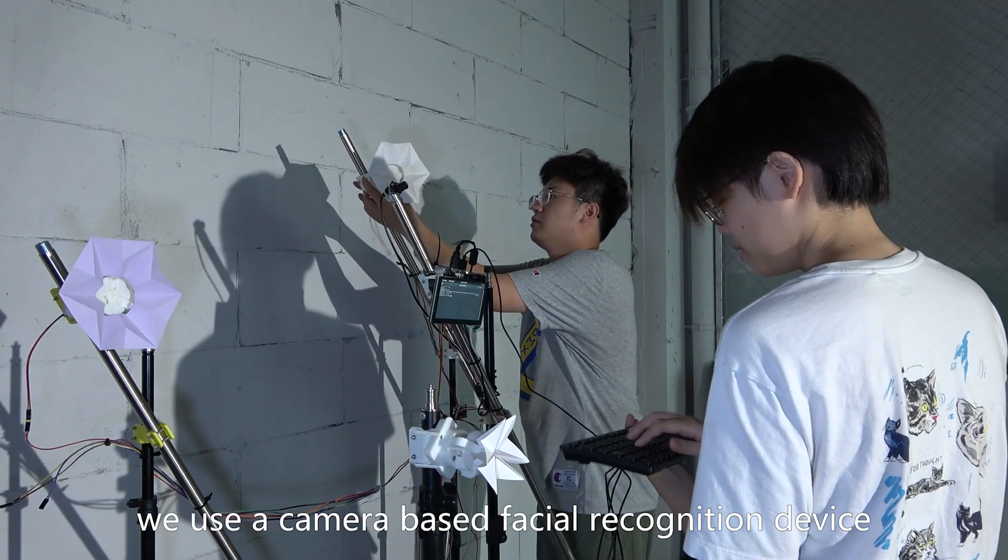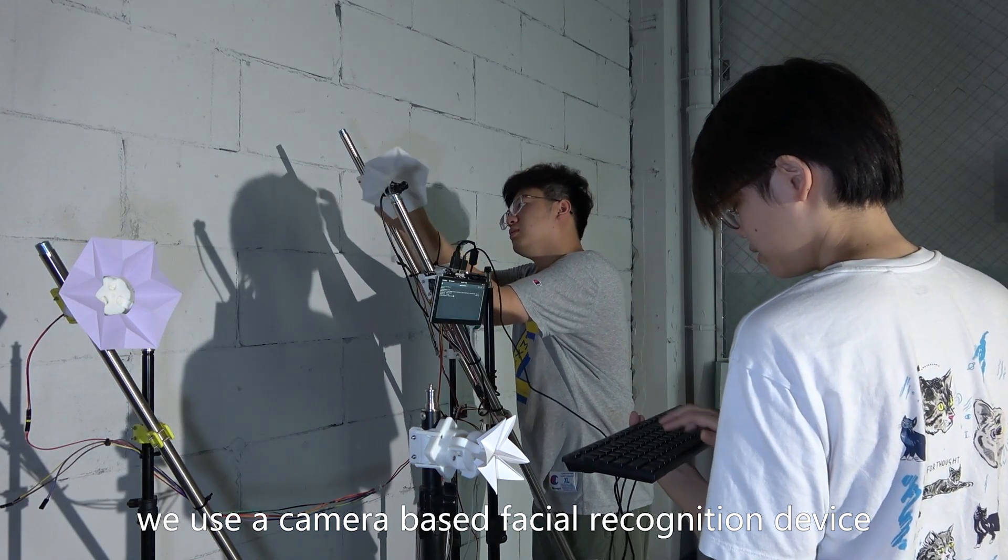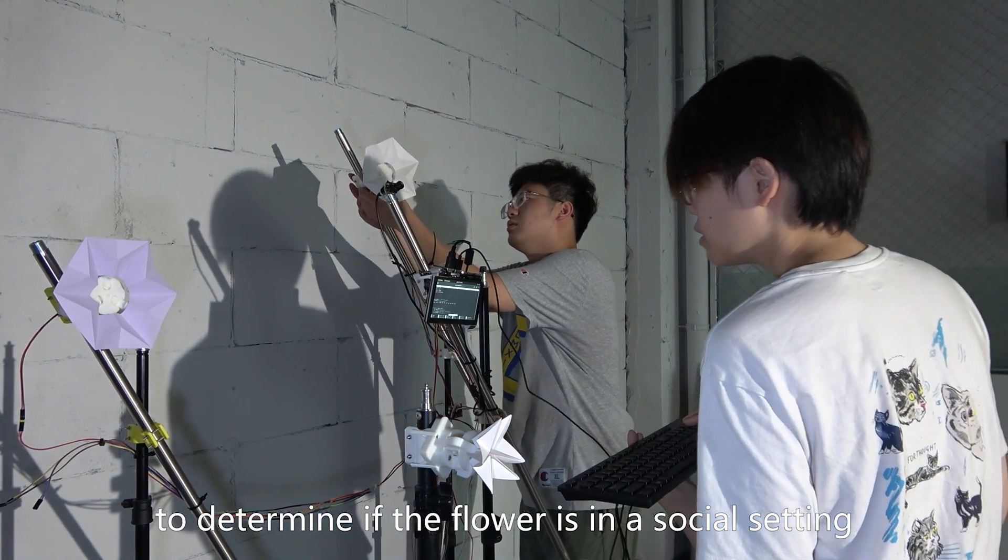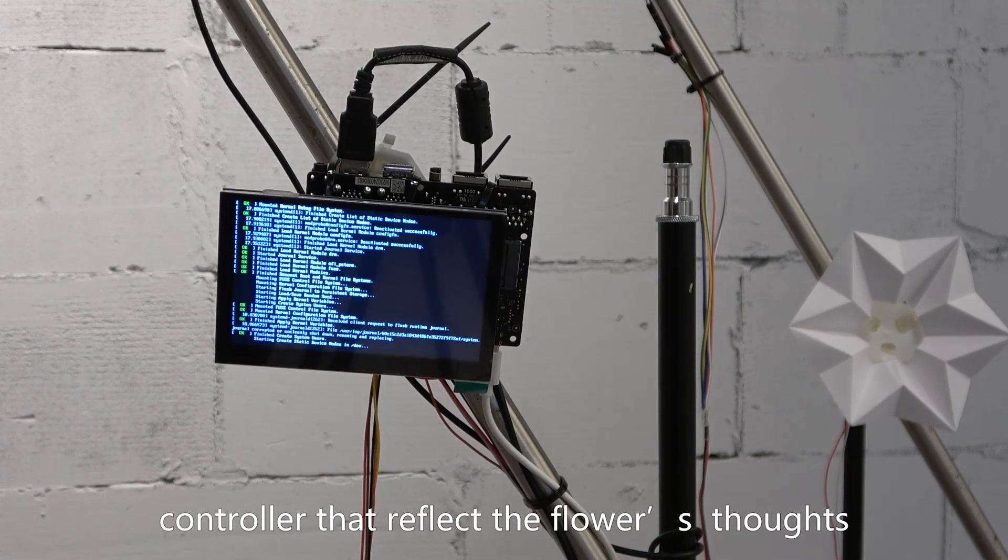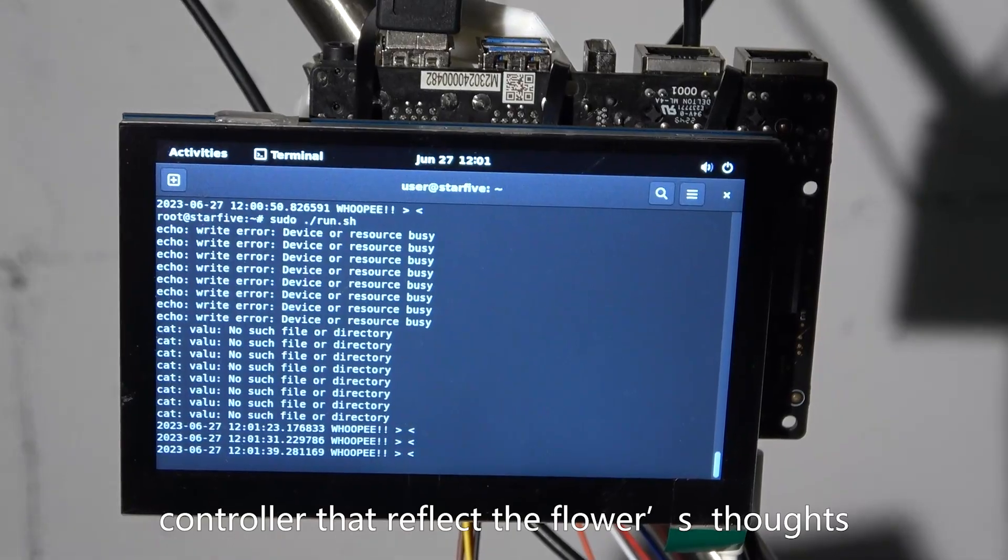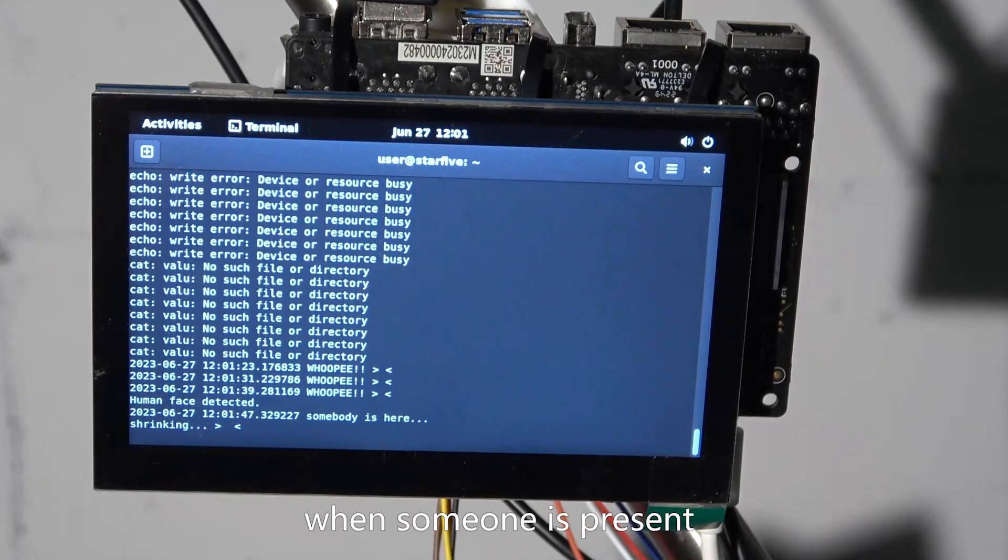We use a camera-based facial recognition device to determine if the flower is in a social setting and connect it to a controller that reflects the flower's thoughts. When someone is present, the petals close and the controller displays 'somebody's here.'